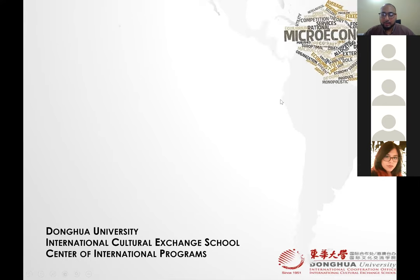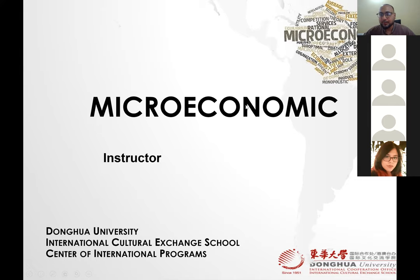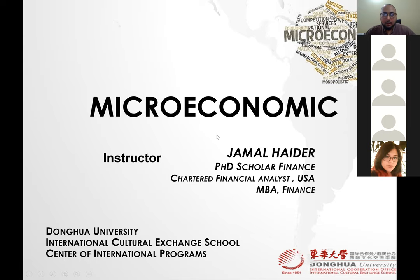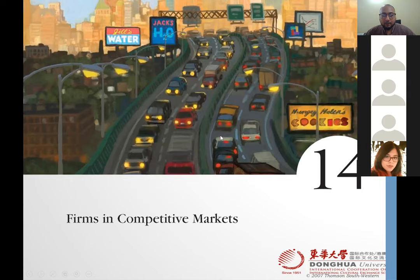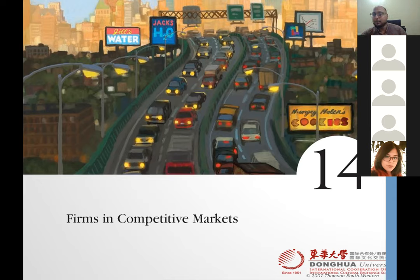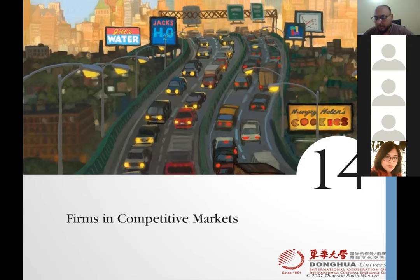Hello class and welcome to our 13th lecture series on microeconomics. I'm your instructor Jamal. Today we'll talk about the review of market structures. We talked about four market structures: number one perfect competition, number two monopoly, number three monopolistic competition, and number four oligopoly. We'll start from the first one, which is perfect competition, found in a competitive market.